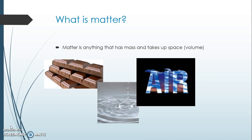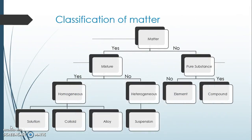Here is a tree map showing how to classify matter. I added an extra category — alloy — that you'll need to add to yours. We can separate matter into two categories: mixture or pure substance, based on one key question.